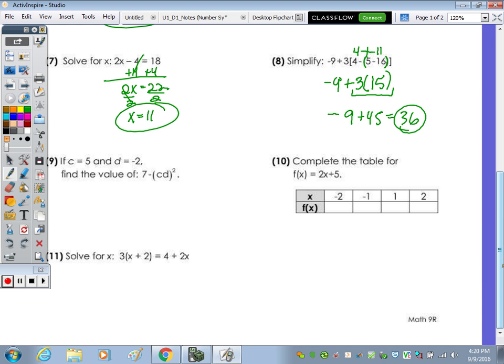Number nine. If c equals 5 and d equals -2, find the value of this expression. So making the substitution, it's 7 - 5 times -2 squared. 5 times -2 is -10, -10 squared is 100. So 7 - 100 is -93.